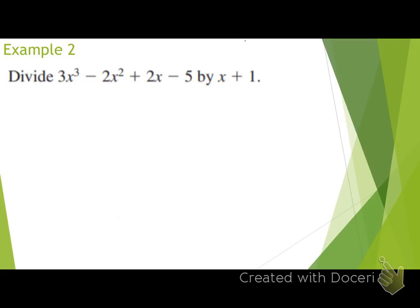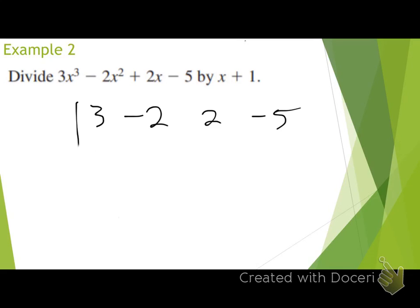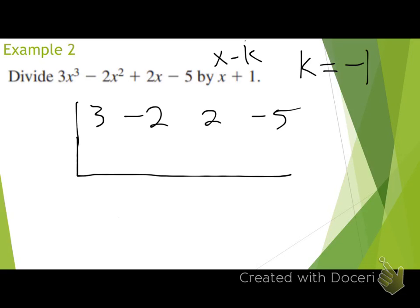So we are able to use synthetic division here. Bring down my coefficients — someone raise your hand if you can read off my correct coefficients: 3, negative 2, 2, negative 5. Very good. Do I need to account for a zero anywhere? Nope, I've got all my descending exponents already there. What is my k value? Negative 1. Because it's in the form x minus k, so if I plug negative 1 in there, I get back to x plus 1.